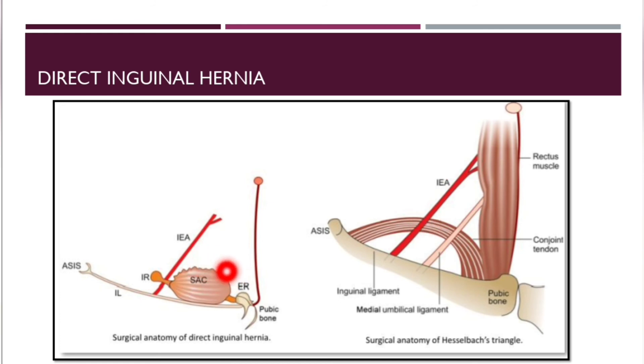You can see medial to the inferior epigastric artery the hernia coming through this part. There is another video showing the differences between direct and indirect inguinal hernias.